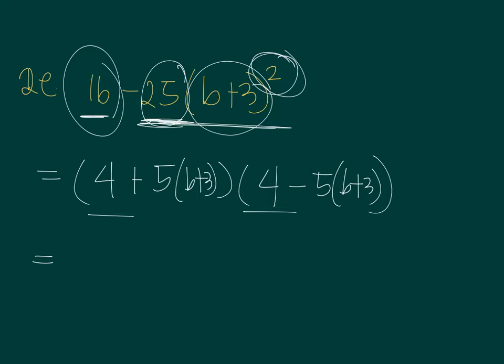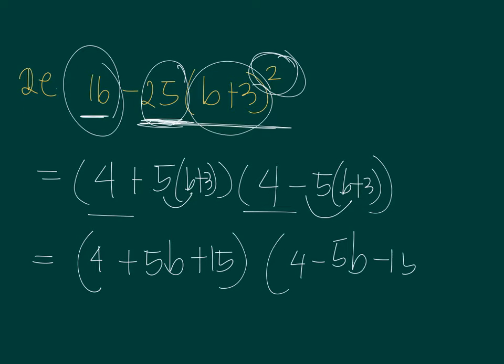And then just to finish up the factoring of this expression, we simplify. You have 5B, distribute 5 to B plus 3, so plus 15, and then 4 minus 5B, and then minus 15.